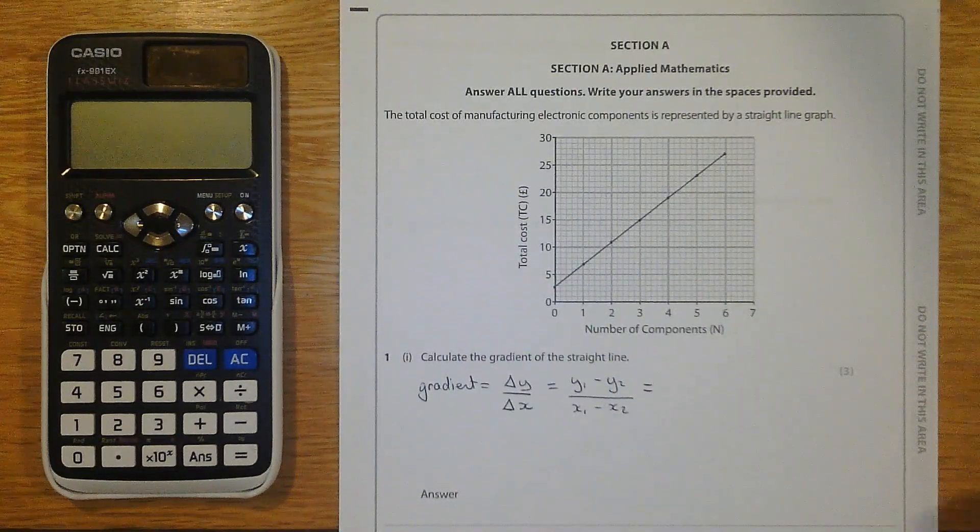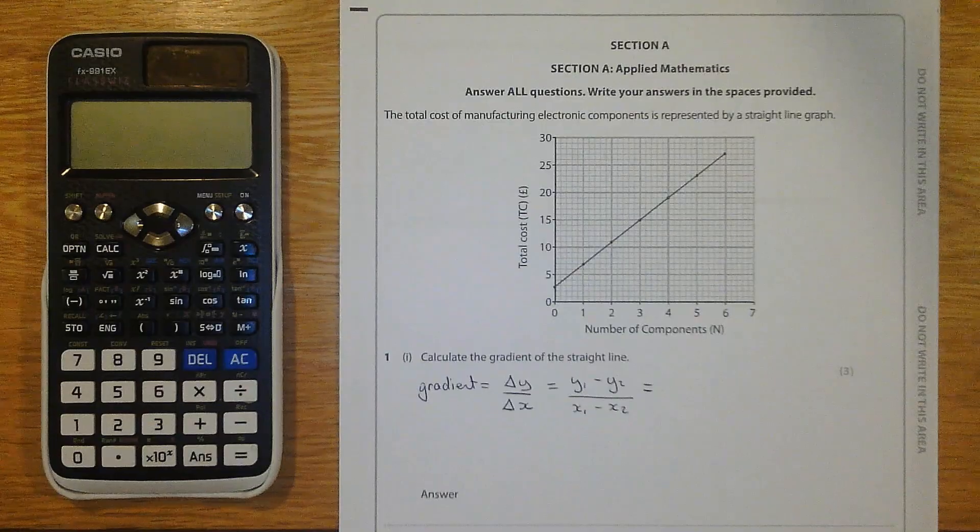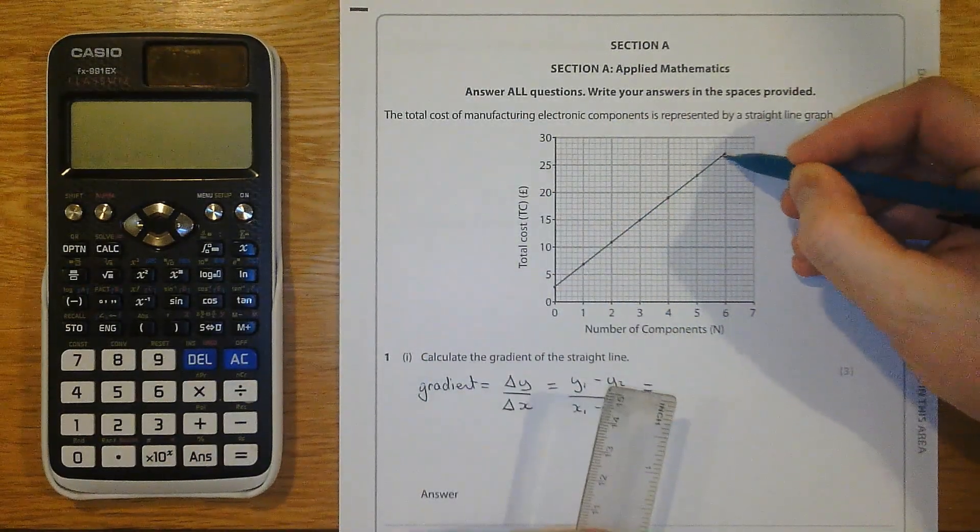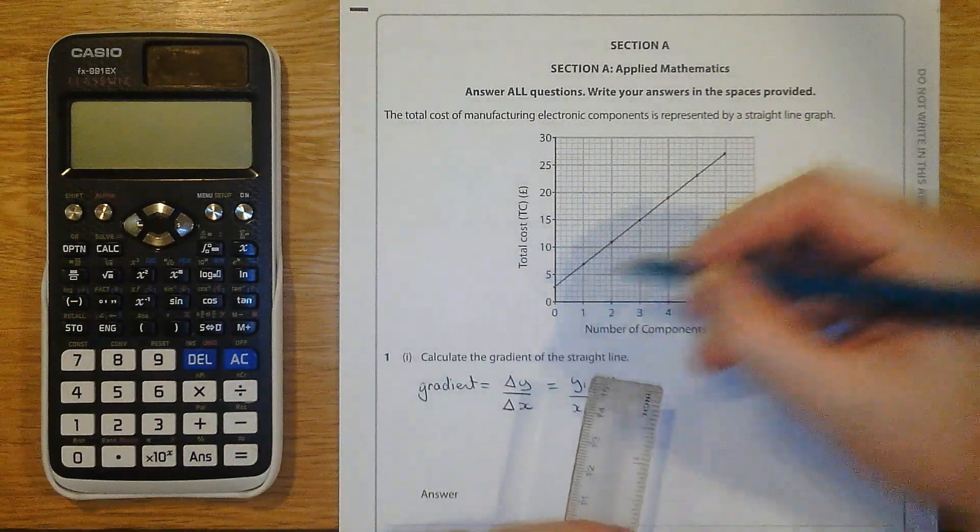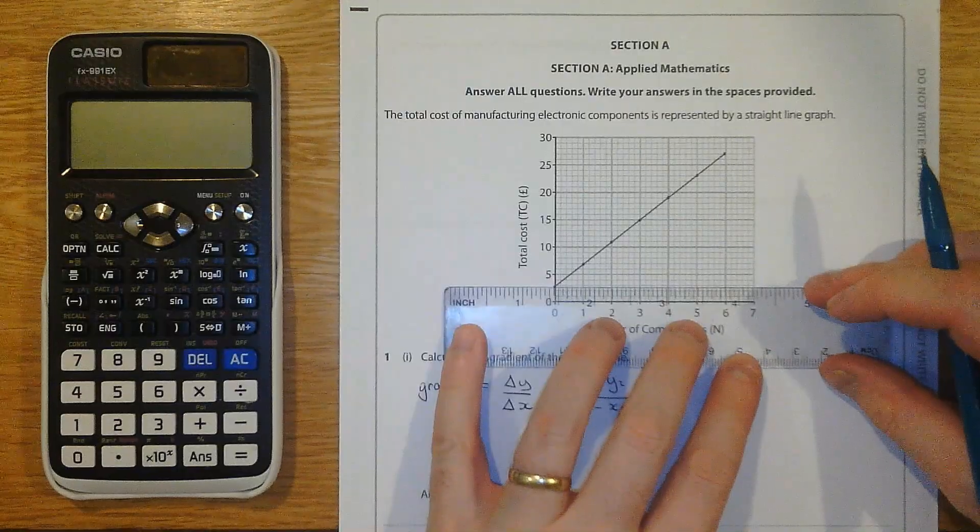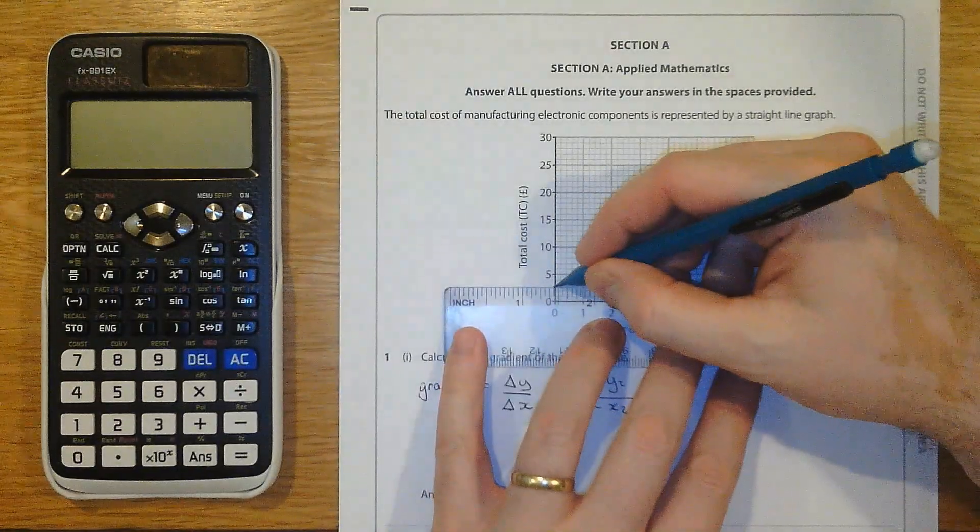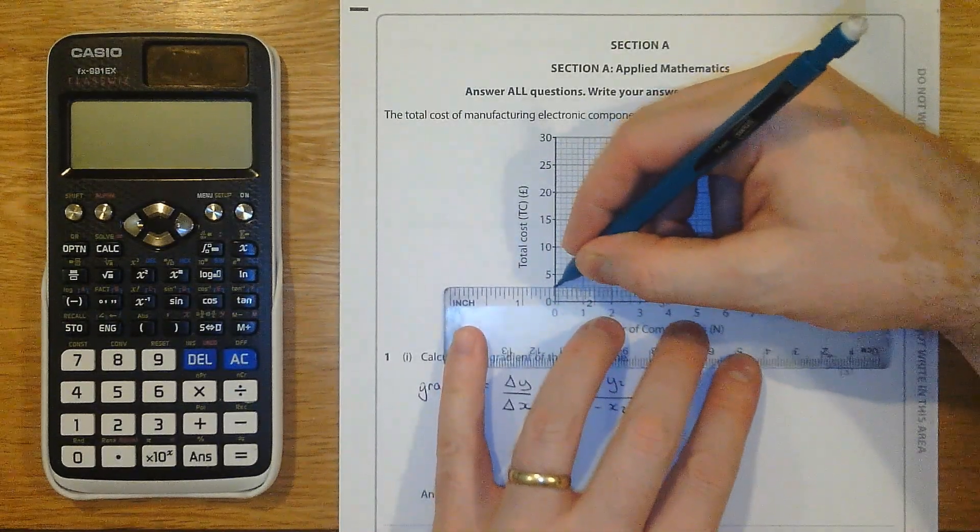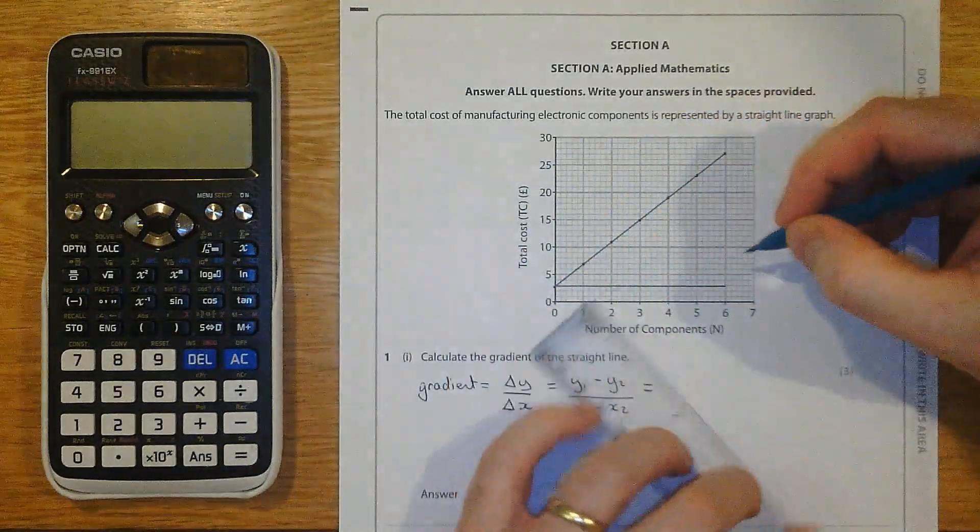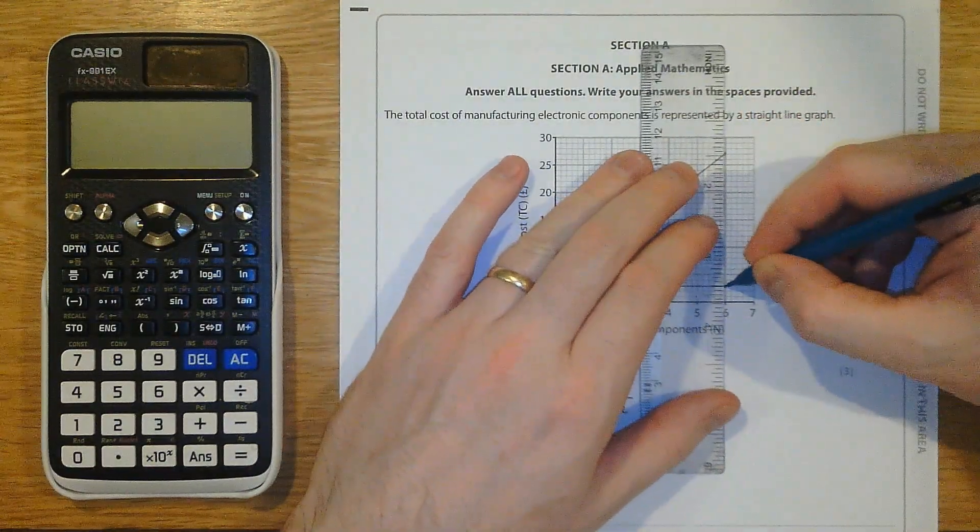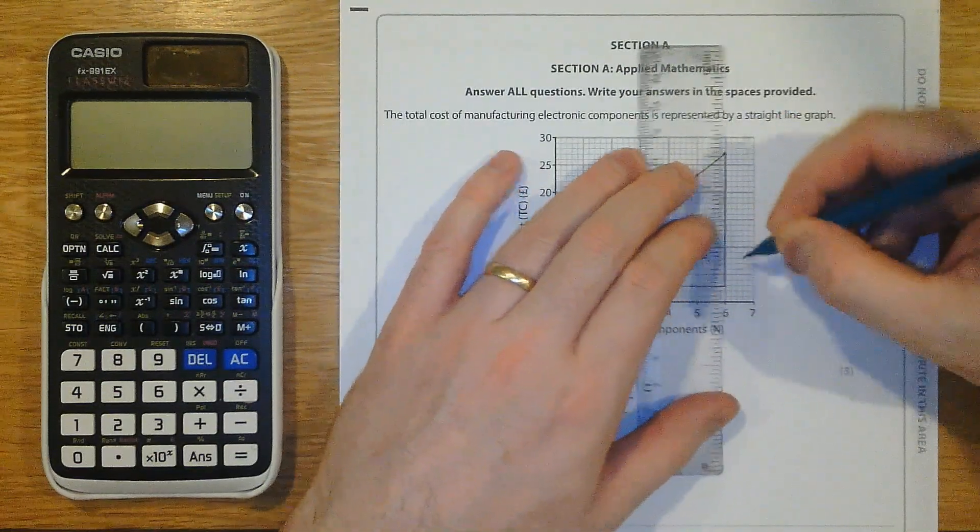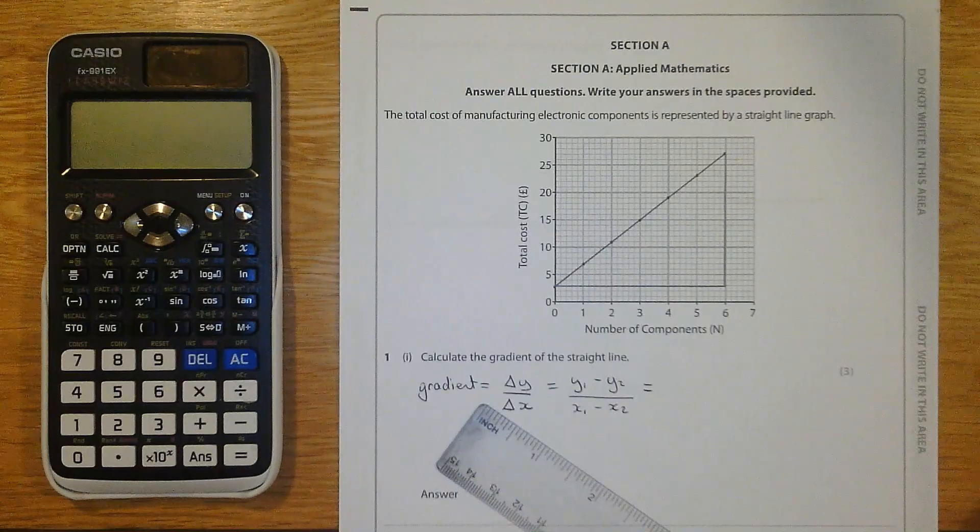So let's choose some points on our graph. Some people find it helpful to draw a triangle for their points. I'm going to choose this point and this point here. If I was using a less precise graph, picking points that are further apart can give me a more reliable measure of the gradient. But this graph is quite precise, so it probably wouldn't make a difference.